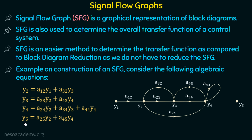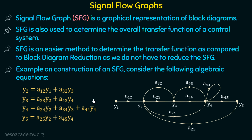Moving on to the last algebraic equation, y5 = a25·y2 + a45·y4. We relate y5 with y2 and y4. In this way, we have represented all these algebraic equations in a graphical manner, and this is the signal flow graph of these algebraic equations. We will discuss how to convert block diagrams into signal flow graphs in a later section of this lecture.